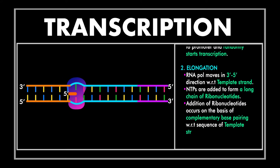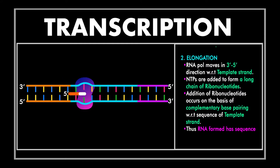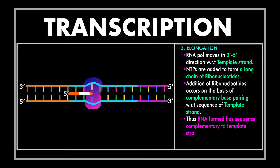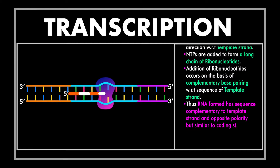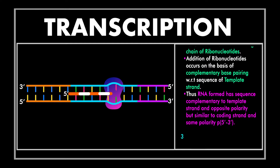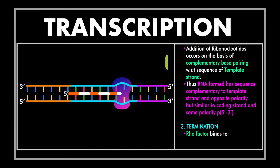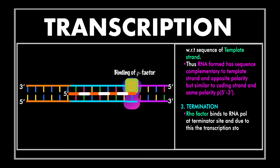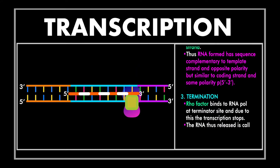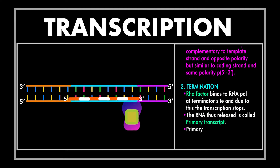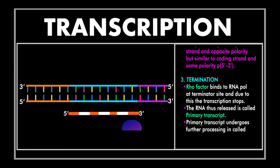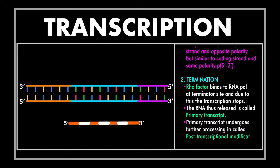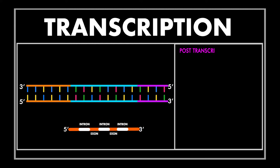The second step is called elongation. The sigma factor is not required for elongation and is released from the RNA polymerase after initiation. The RNA polymerase now moves in the three prime to five prime direction with respect to the template strand and adds nucleotides using NTPs as substrate through complementary base pairing. As the RNA polymerase reaches the terminator site, rho factors bind to it and stop the transcription process. The RNA chain thus formed is called the primary transcript.